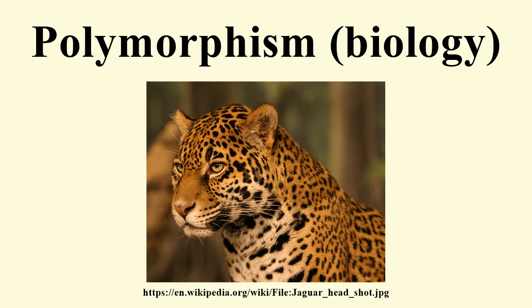The switch: the mechanism which decides which of several morphs an individual displays is called the switch. This switch may be genetic, or it may be environmental. Taking sex determination as the example: in humans the determination is genetic, by the XY sex determination system. In Hymenoptera, sex determination is by haplodiploidy. The females are all diploid, the males are haploid. However, in some animals an environmental trigger determines the sex. Alligators are a famous case in point. In ants, the distinction between workers and guards is environmental, determined by the feeding of the grubs.